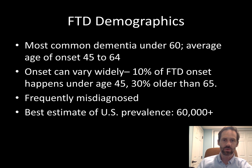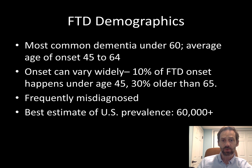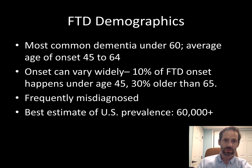FTD is one of the most common causes of young onset neurodegenerative dementia, with an average age of onset between 45 to 65 years of age, though people younger and older than that range can also get the disease. FTD impacts around 60,000 people in the United States. Diagnosis is frequently slow, with often years of misdiagnosis before an accurate diagnosis of FTD is provided.